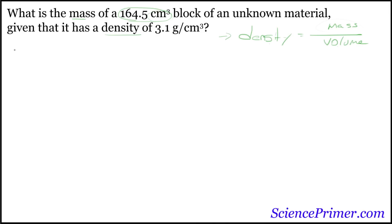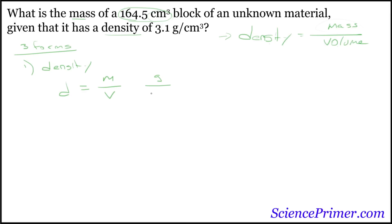You're going to need to know three forms of this equation to solve all the problems in this problem set. The first form is when you're asked to find density — the standard definition — which is mass over volume. Keeping track of units is a very good way to avoid mistakes. Mass is in grams, volume is in cubic centimeters, so dividing grams by cubic centimeters gives you density.